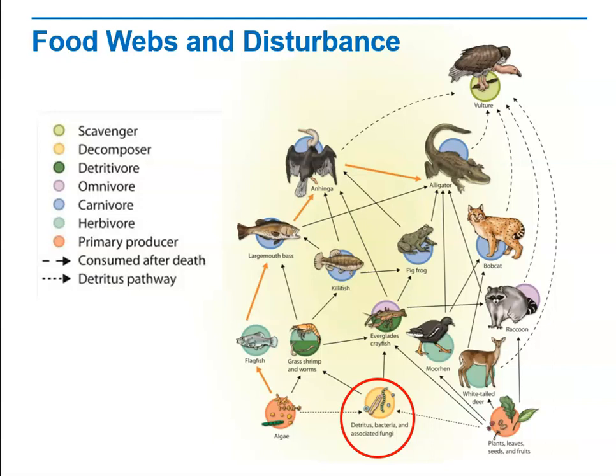What effect do you think that this might have on populations of shrimp? Let's find the shrimp population — grass shrimp and worms. The shrimp population would decline because their food source would be diminished. So if they don't have their food, the shrimp population would decline.